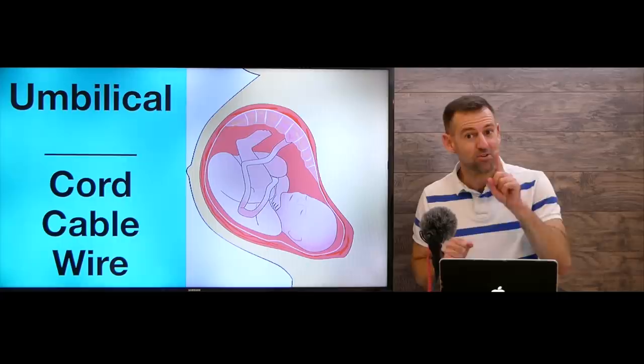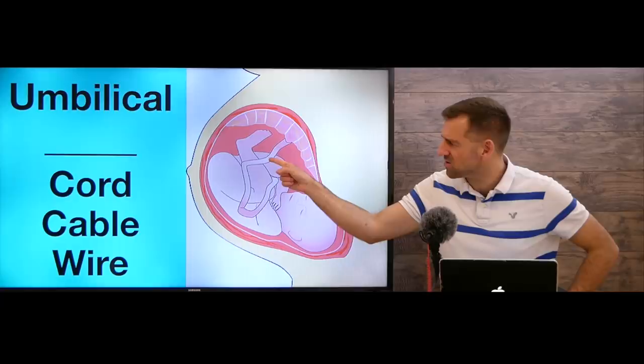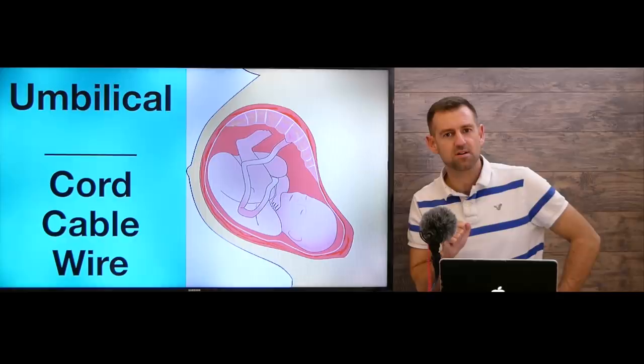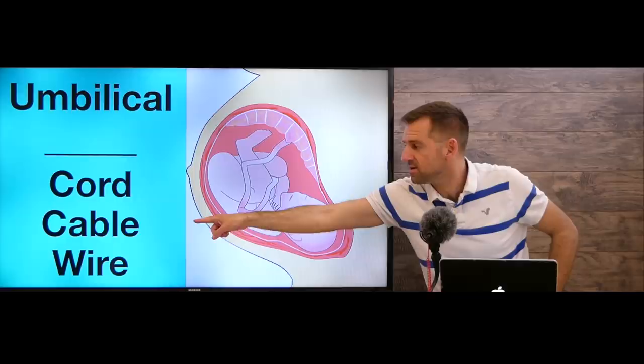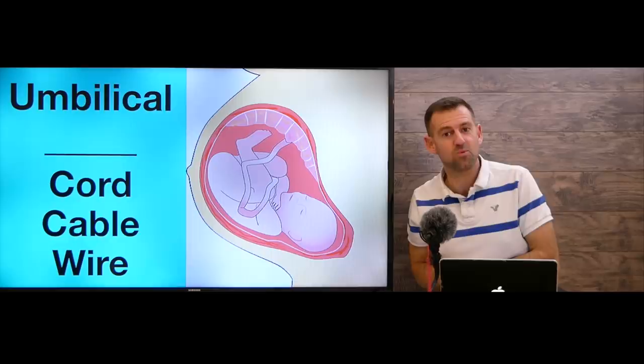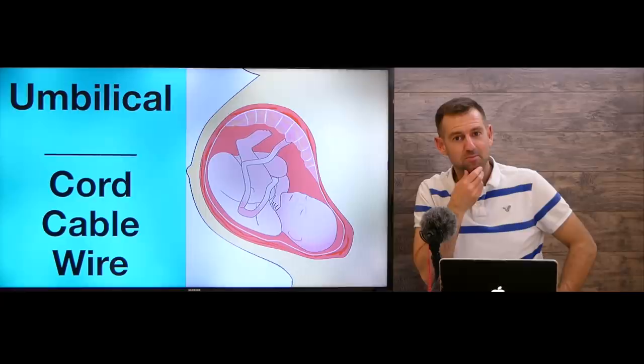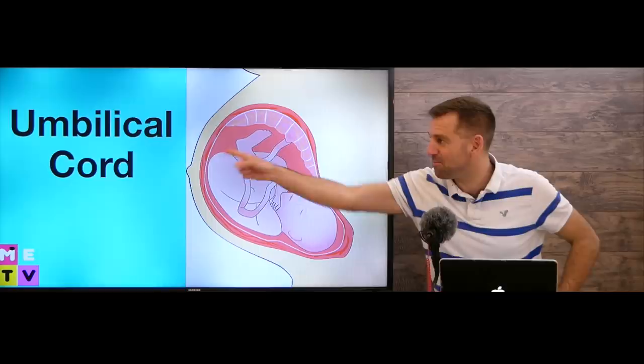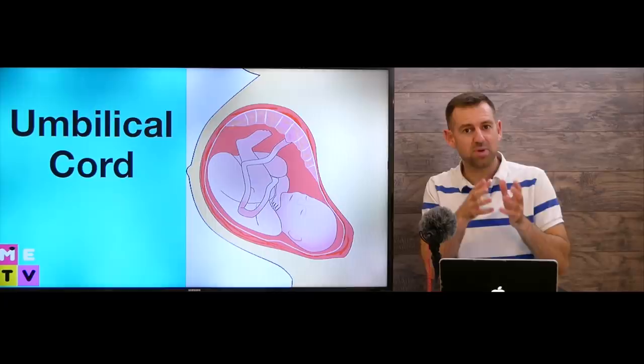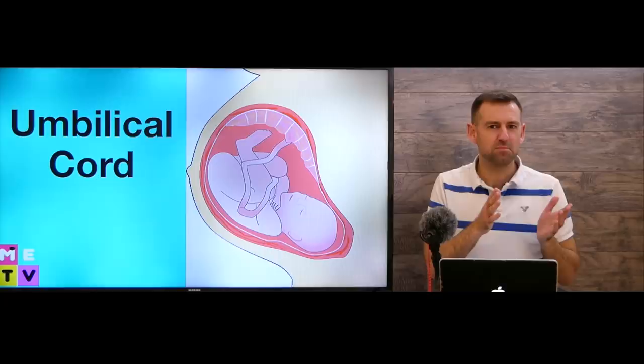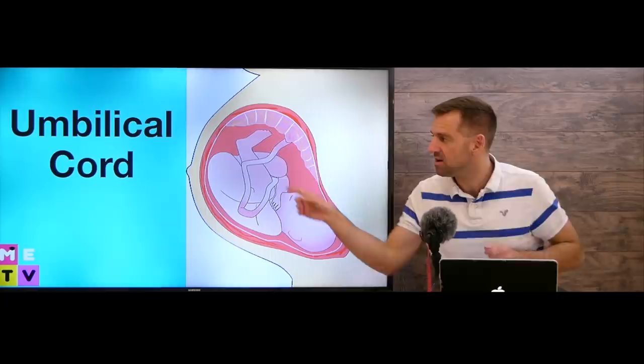The first question: look at this thing here that connects the mother to her child. What is that? That's called the umbilical cord, cable, or wire — which one is the right answer? The answer is the umbilical cord. This thing that connects the baby to its mother is called the umbilical cord. You cannot say umbilical cable, and you can't say umbilical wire. It has to be umbilical cord.